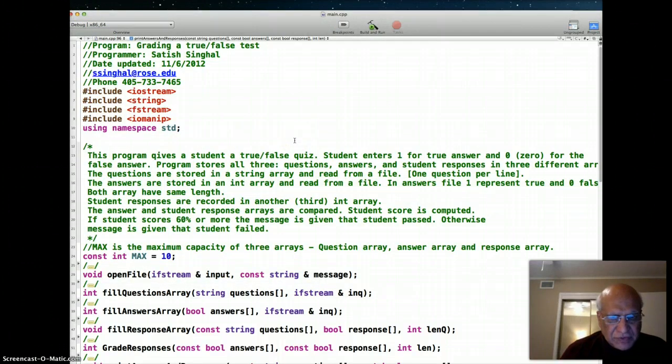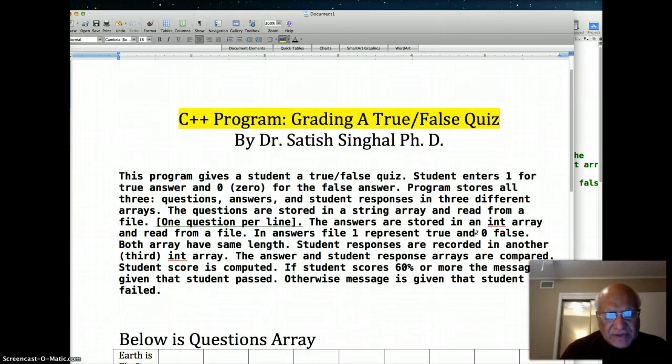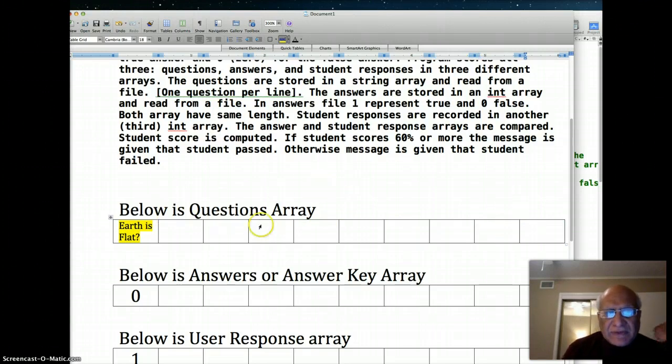Now we're going to explain the theory behind this program using some diagrams in Microsoft Word. The questions.txt file has ten questions. We're going to create an array of size 10, and each element of the array will have a question. The first element has a question like Earth is flat, second element will have a question, third, fourth, fifth, and so on.